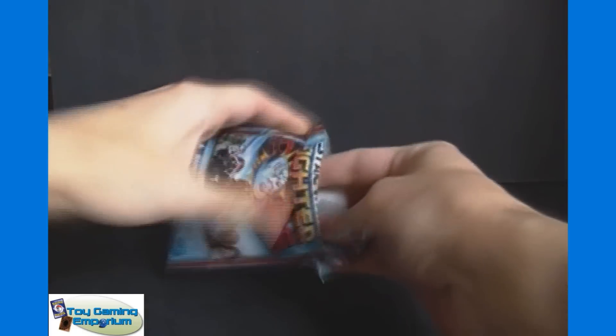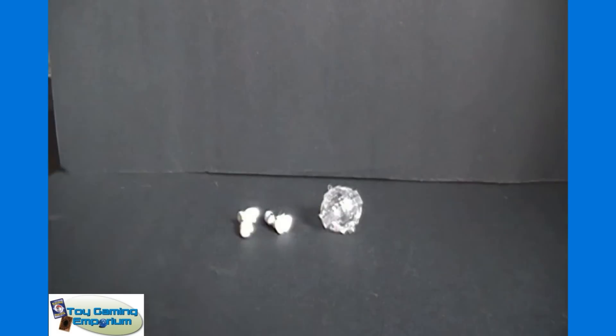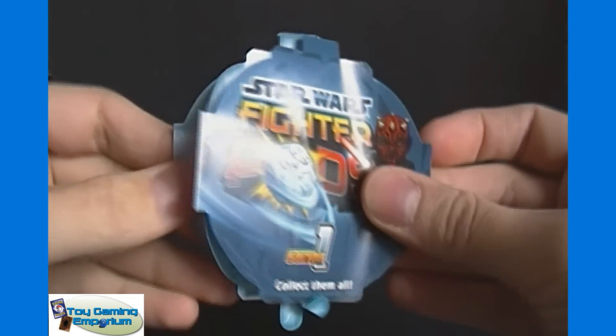Let's see what we got. I don't know if there's a checklist or anything like that in here, but there's our sphere. And there are two characters. Yep, there's a collector guide in here. Star Wars Fighter Pods. Let's see. What's the front and what's the back? I guess this is the front.